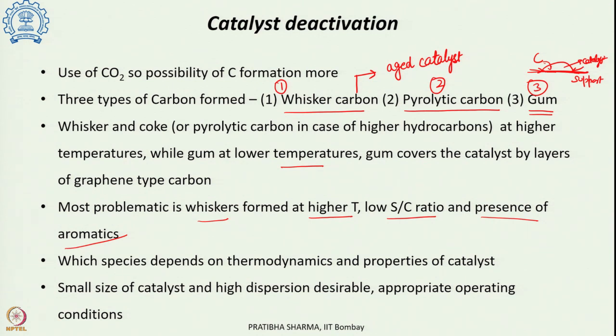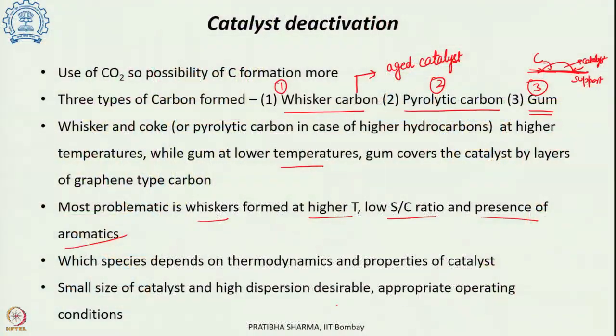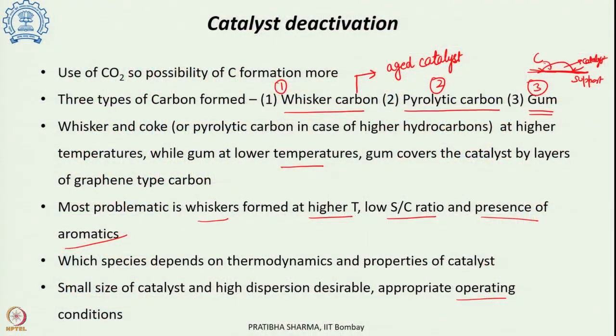Small catalyst size and high surface area with higher dispersion are desirable to reduce coke formation. Appropriate operating conditions — temperatures and pressures — should also keep catalyst deactivation lower. However, very small catalyst size leads to pressure drop, so there must be an optimum size that balances heat transfer and pressure drop inside the bed.